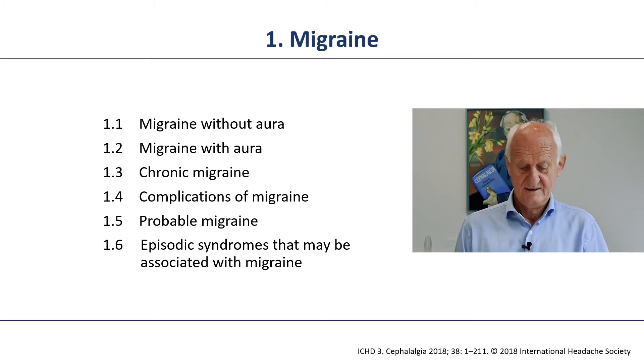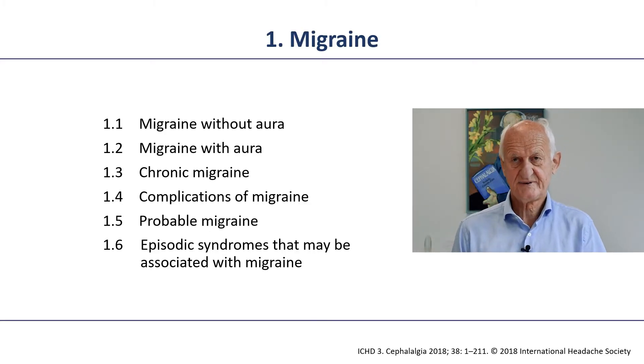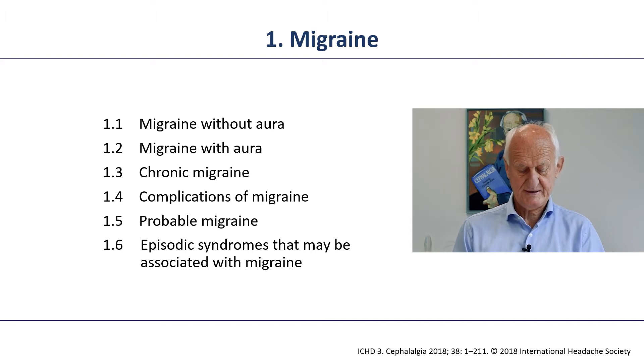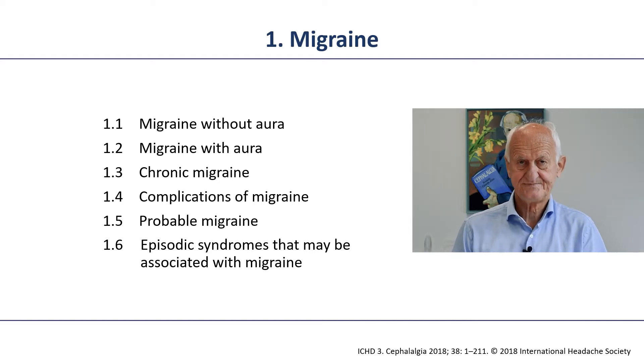In this tutorial we'll talk about migraine without aura and chronic migraine. The classification of migraine at the two-digit level includes migraine without aura, migraine with aura, chronic migraine, complications of migraine, probable migraine, and episodic syndromes that may be associated with migraine. Many of these can be further subdivided down to the fourth and fifth digit, and we'll see examples of that later in the talk.